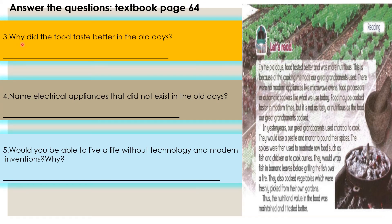Let's continue with number three: why did the food taste better in the old days? I think you can find the answer from this paragraph — the nutritional value in the food was maintained and it tasted better. For number four: name electrical appliances that did not exist in the old days. I think the answer you can find from the first paragraph — there were no modern appliances like microwave ovens, food processors or automatic cookers.